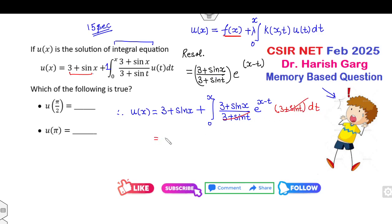Your integration is with respect to t, so I can take the x component outside. So it is 3 outside plus sine x outside e raised to power x outside. The inside remaining is 0 to x, e raised to power minus t. So can you integrate them? It is 1 minus e raised to power minus t. And if I substitute the upper limits, it will be 0 to x.